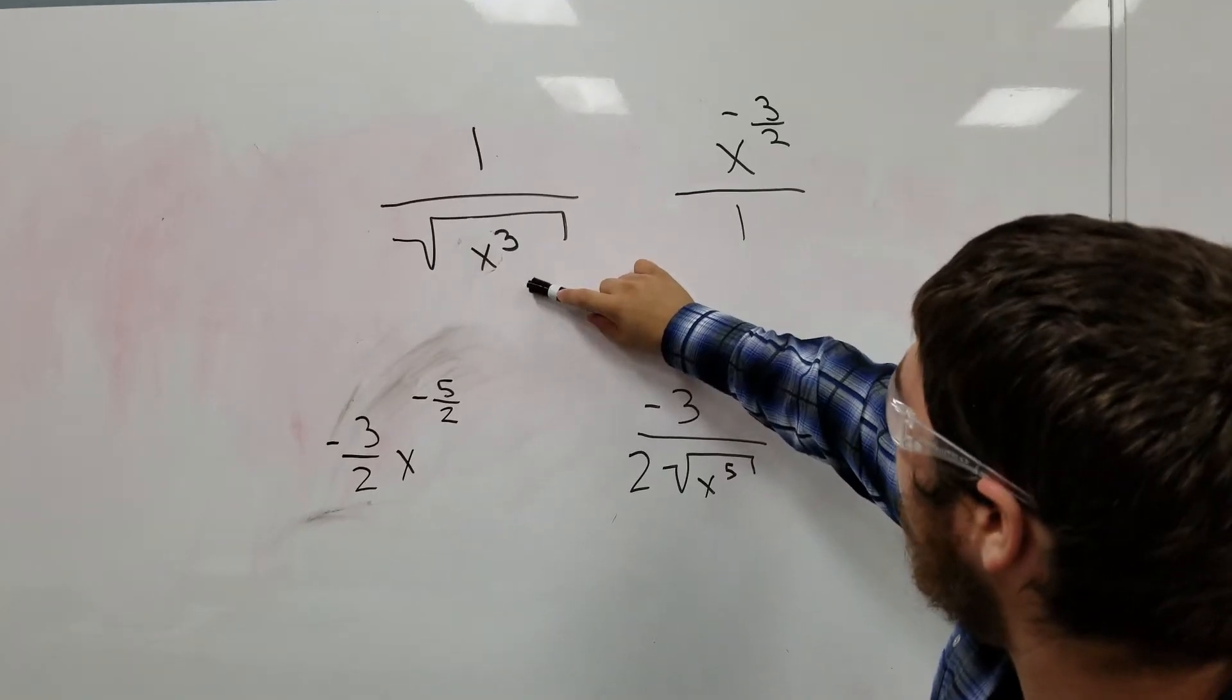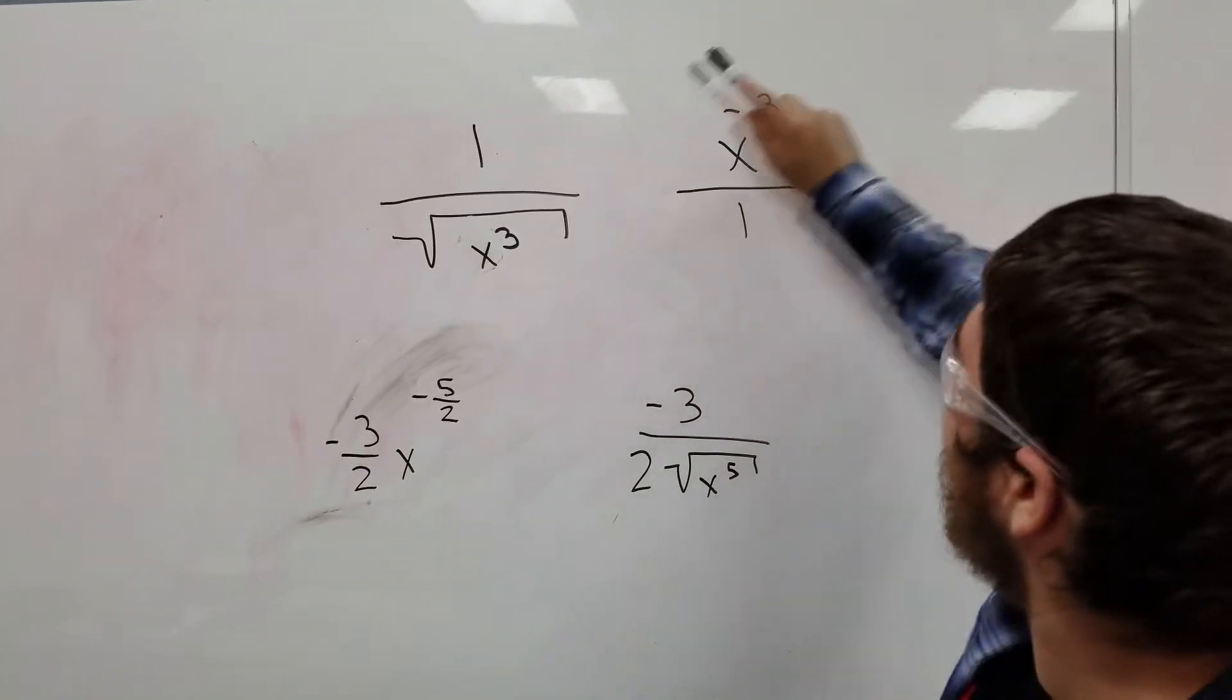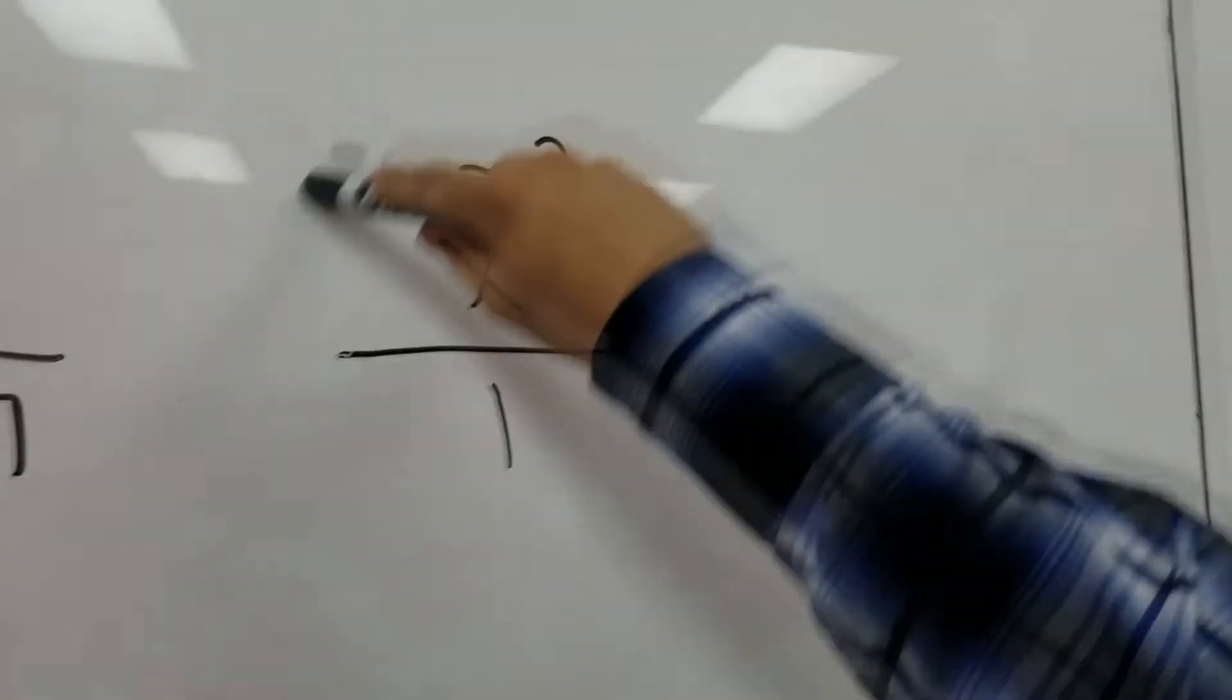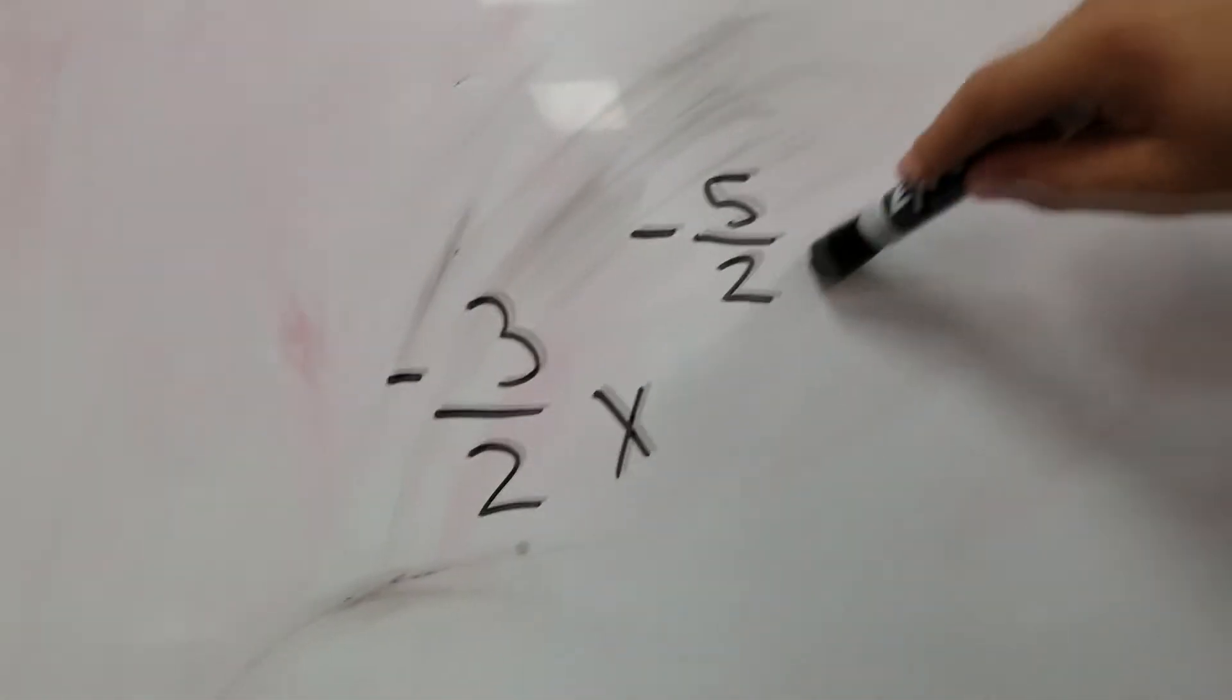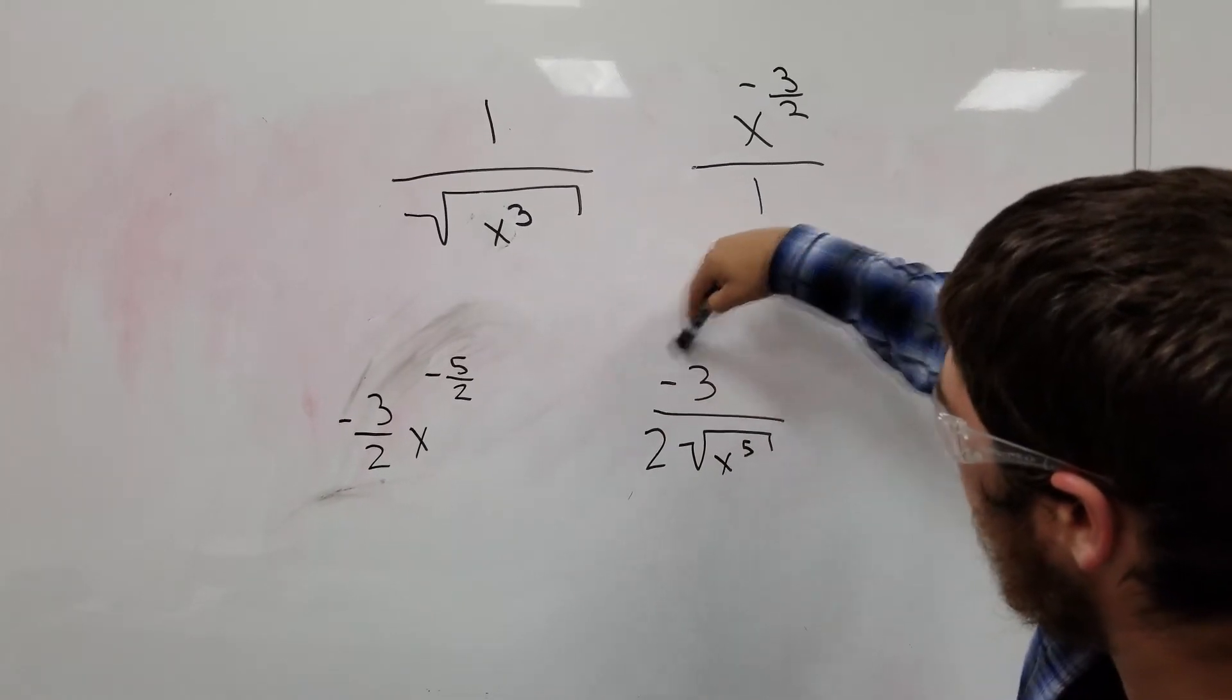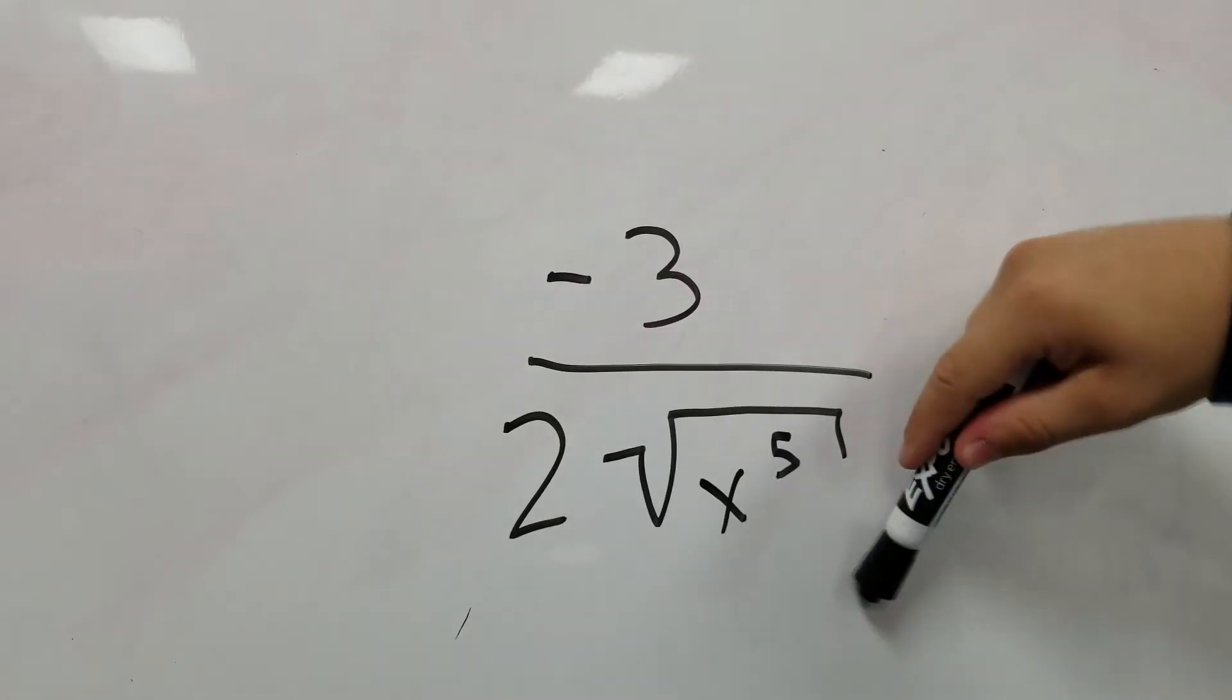If you got that x in the bottom, then you'll try to put it on the top with a negative on the side. Derive then minus, but don't leave it on the top. Put it on the bottom, and that is where you'll stop.